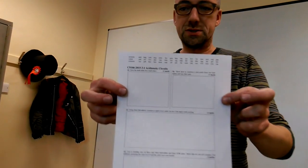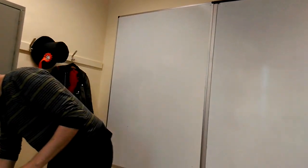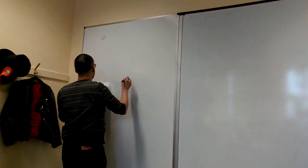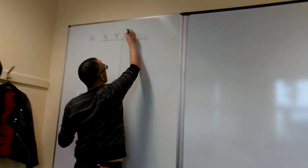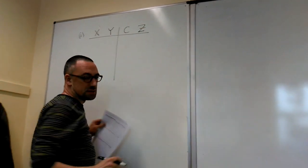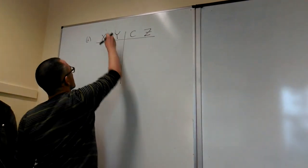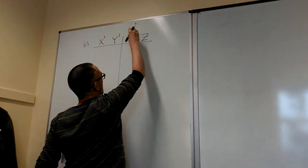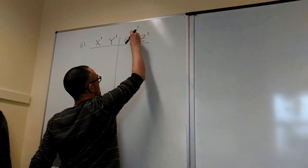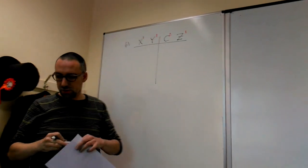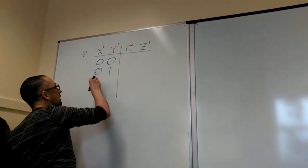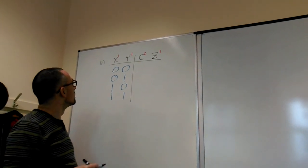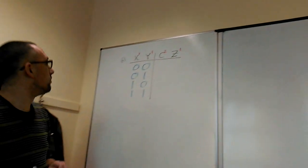Let's work through question 3.1 on arithmetic circuits here on the board. Part A asks for the truth table for a half adder. We call the inputs X and Y and the outputs C and Z, where C is for carry. The place values of the inputs are both 1, and in the outputs Z has place value 1 and the carry has place value 2. We tabulate all possible inputs by counting to 3 and generate the outputs by adding.